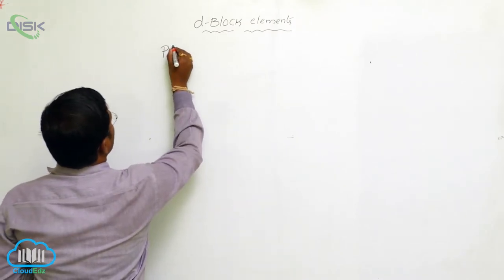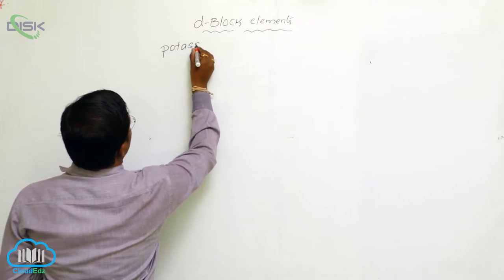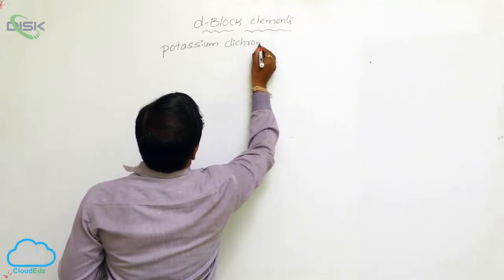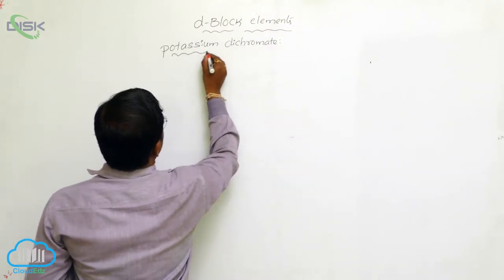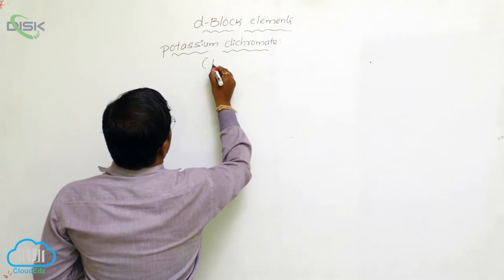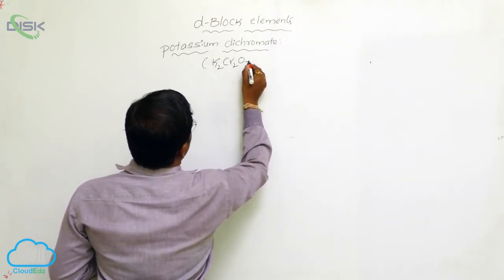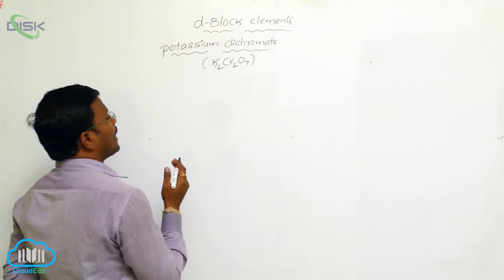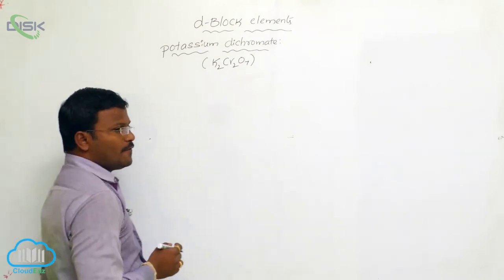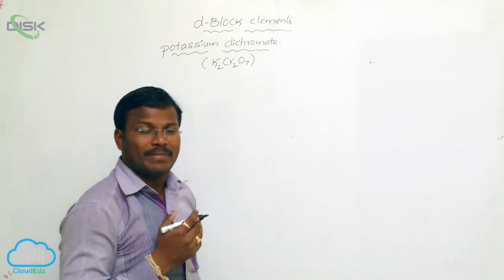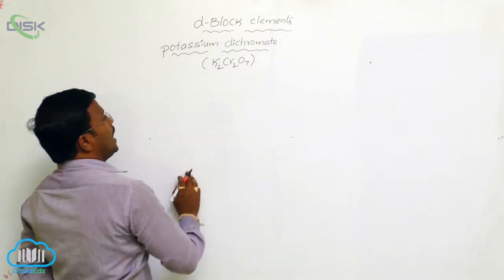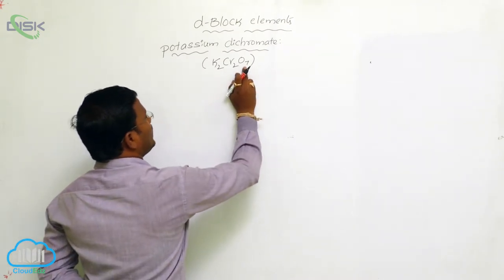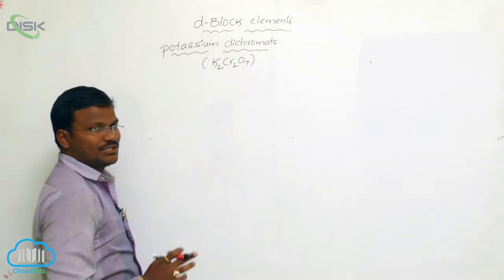Let us discuss potassium dichromate, which has the molecular formula K2Cr2O7. The transition metal present in potassium dichromate is chromium, and the oxidation state of chromium in potassium dichromate is +6.